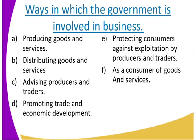Let us look at the ways in which the government is involved in business activities. Number one: producing goods and services. The government produces goods and services — those that cannot be produced by the private sector. For example, provision of services like security is given by the government.